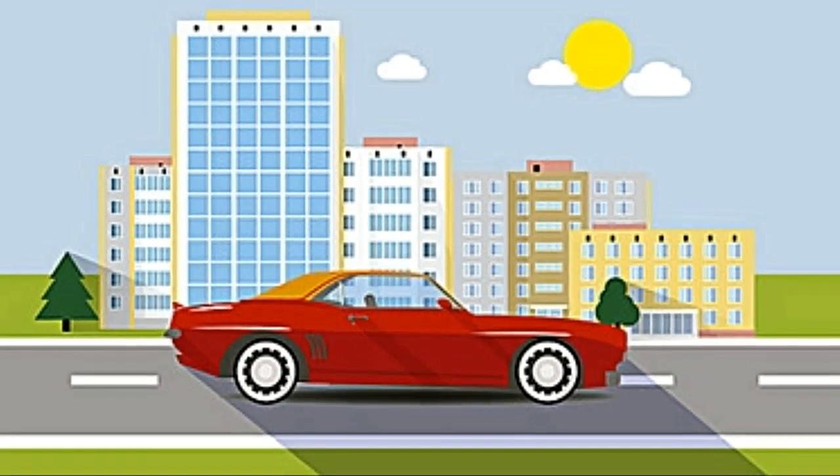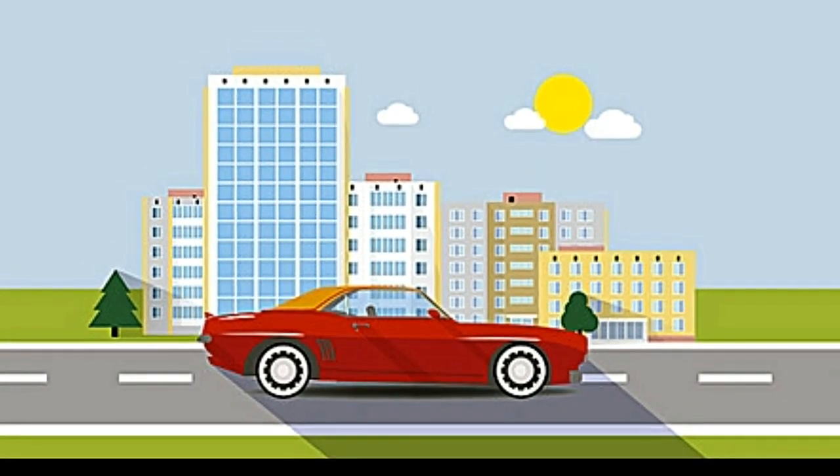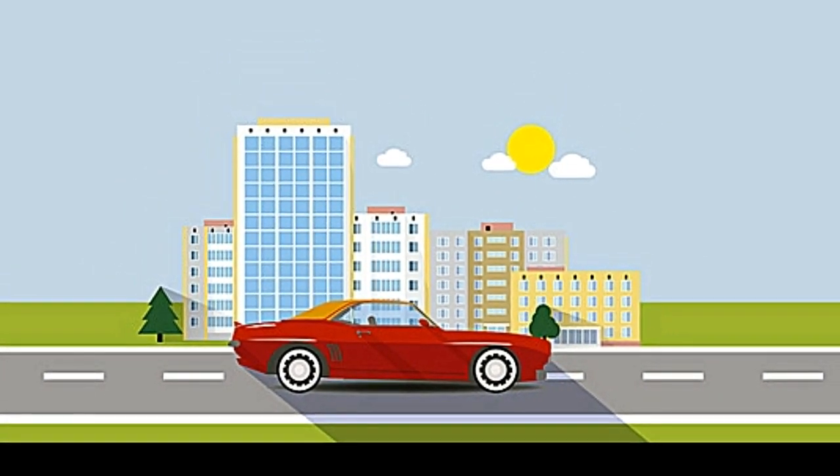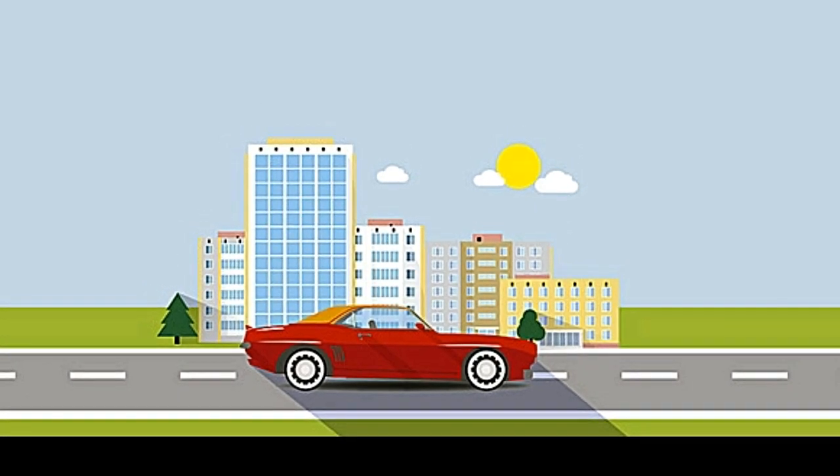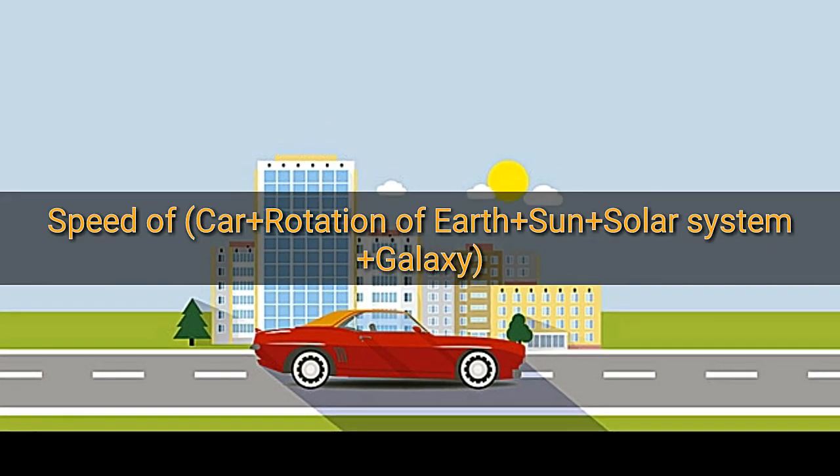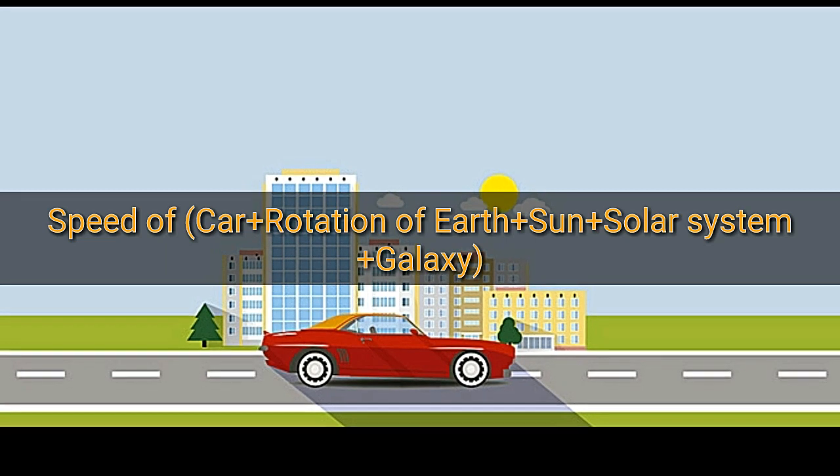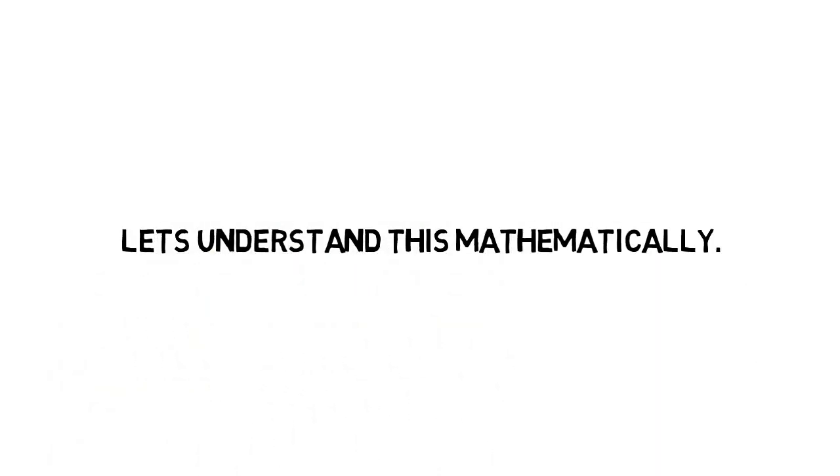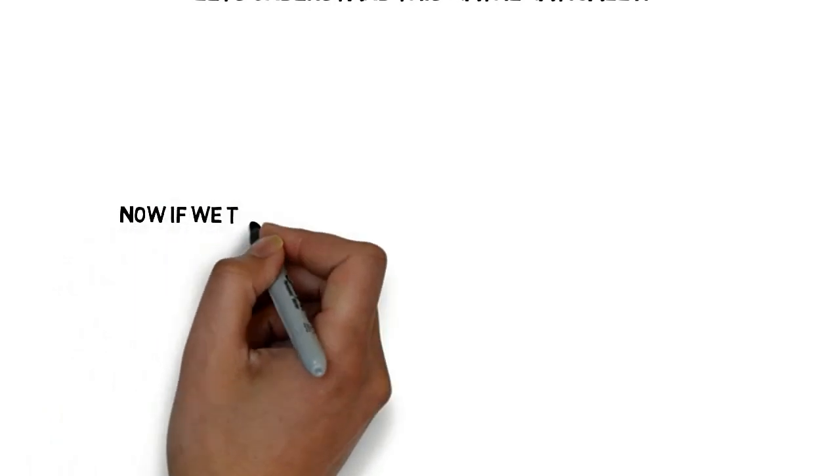So with all this motion going around, if we calculate the speed of the car with respect to the universe, we will get that the car is moving with tremendous speed as all the speeds of the Earth, sun, solar system, and galaxy get added to it. So here the frame of reference comes into play. Let's understand this mathematically.